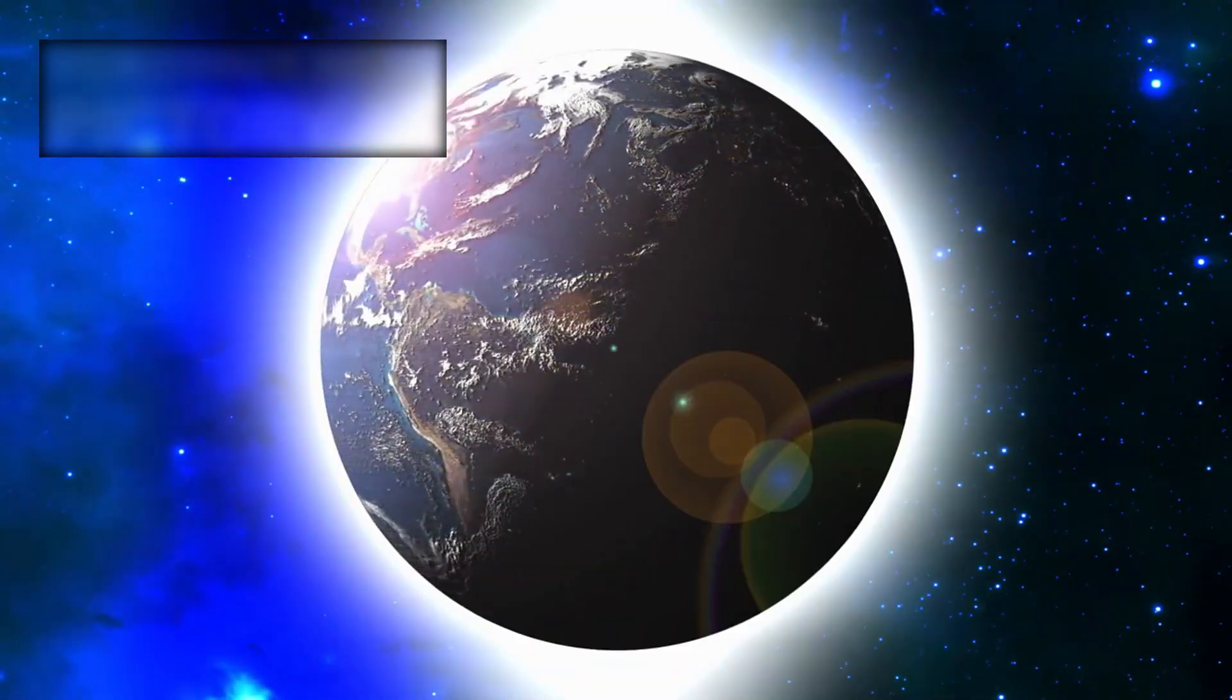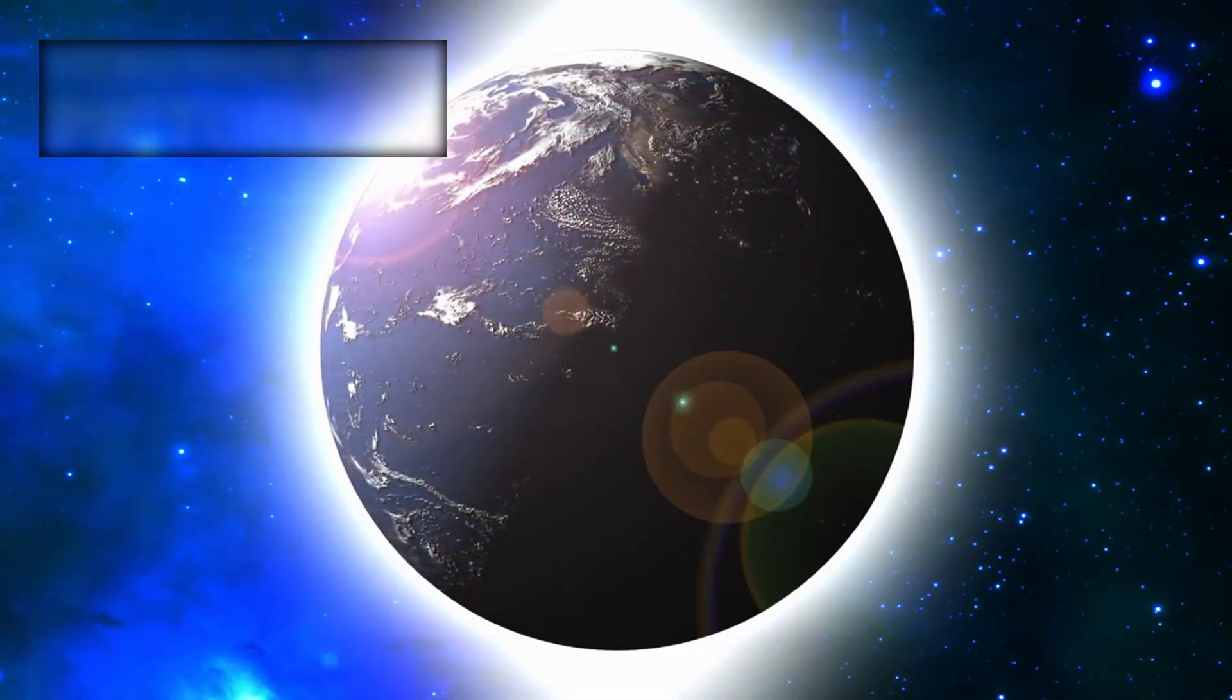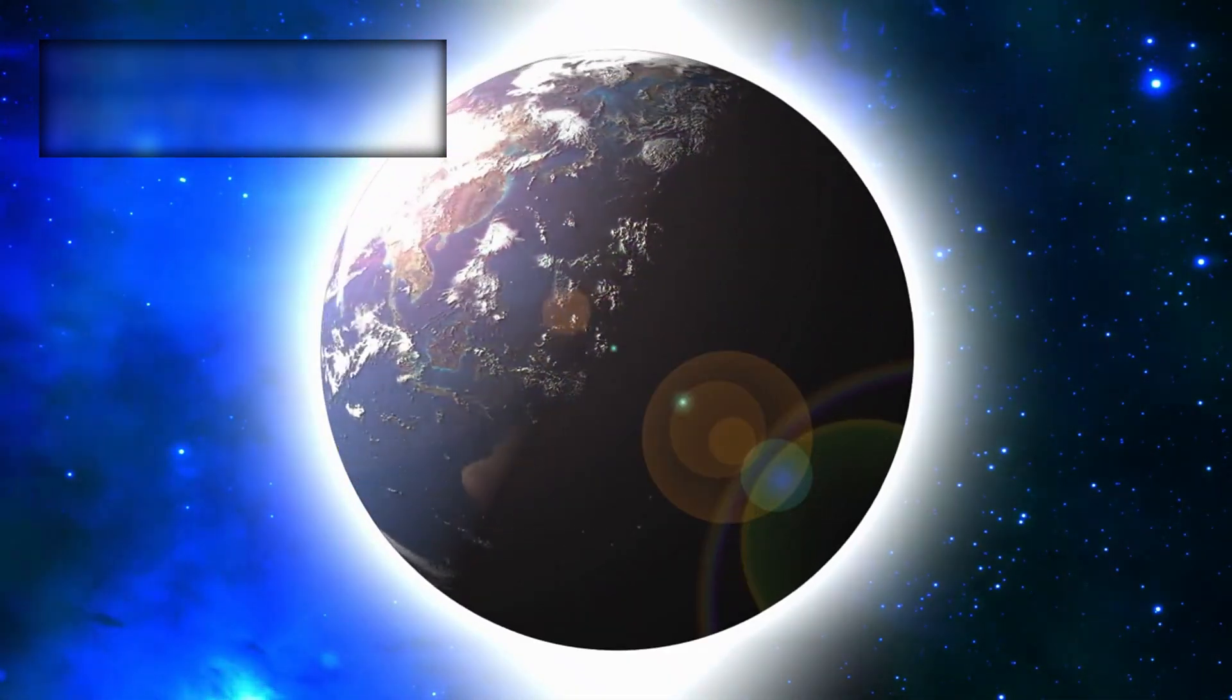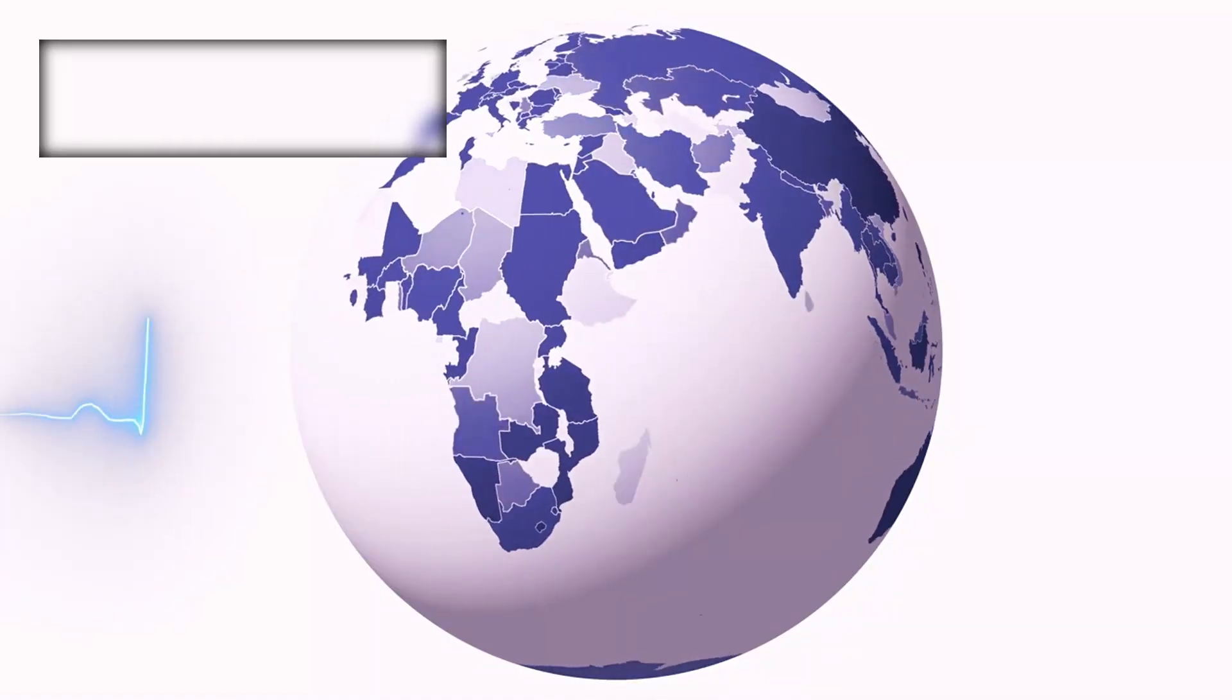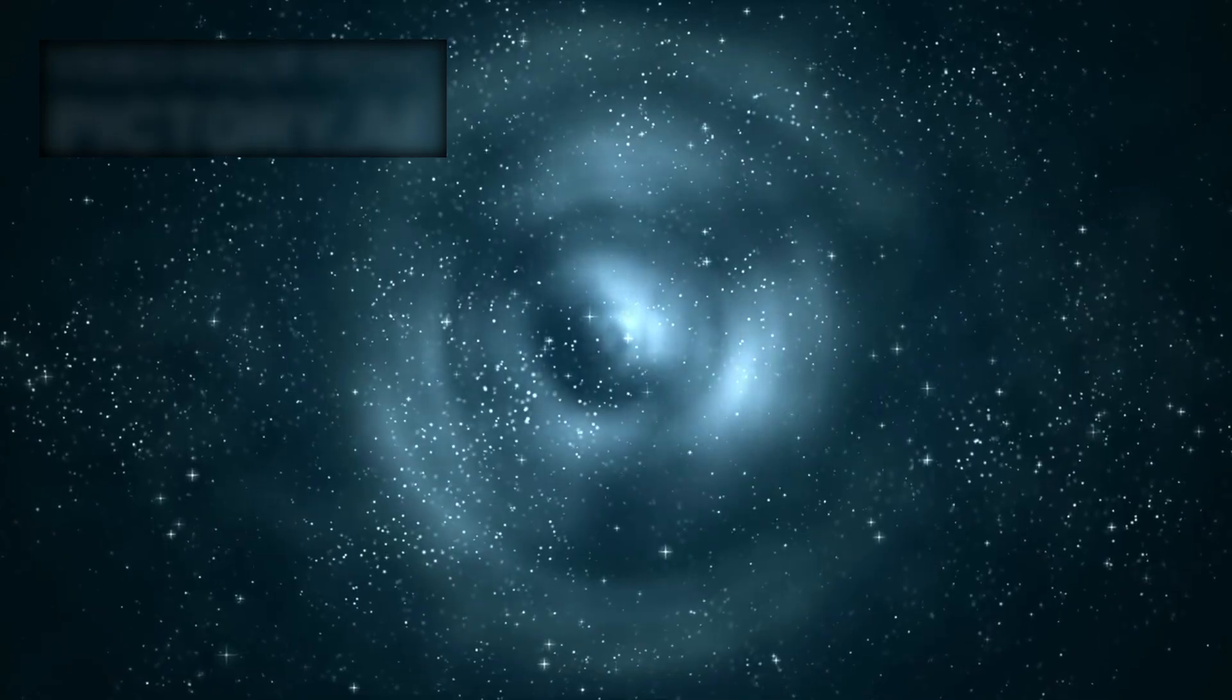This connects to an ancient hypothesis, panspermia, the idea that life, or at least its building blocks, are not confined to one planet but travel across the cosmos. If interstellar objects like 3I ATLAS can preserve complex molecules for millions or even billions of years and release them in bursts, perhaps life is not rare at all. Perhaps Earth was not an exception. Perhaps life is a galactic inheritance.